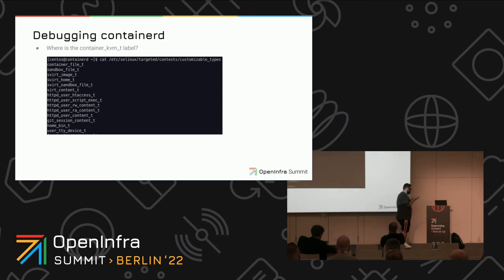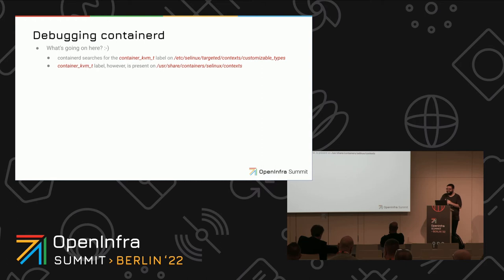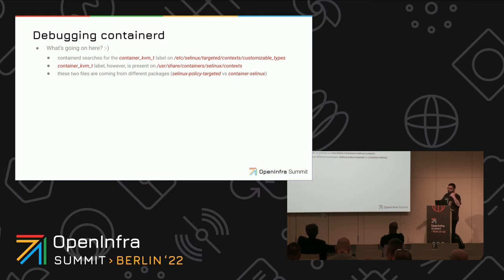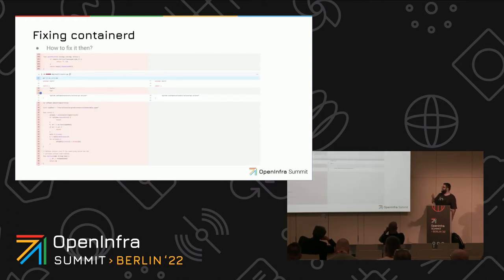So what do we know? Containerd searches for a label in a file where the label is not present. This label is present in another file — /usr/share/containers/selinux/contexts. Those are two different projects and two different packages. The first comes from the selinux-policy-targeted package from your distro; the second comes from the container-selinux policy package. How do we fix that? Just remove a bunch of code — best way, right?